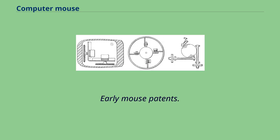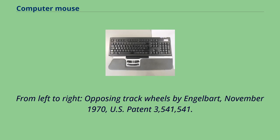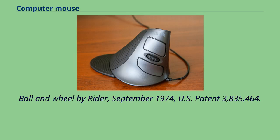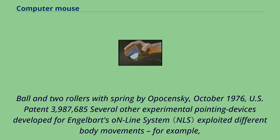Early mouse patents include: opposing track wheels by Engelbart, November 1970, U.S. patent 3,541,541; ball and wheel by Ryder, September 1974, U.S. patent 3,835,464; and ball and two rollers with spring by Oposensky, October 1976, U.S. patent 3,987,685.